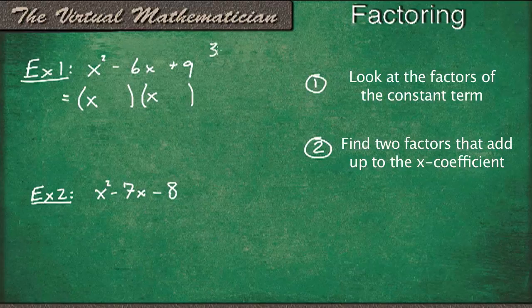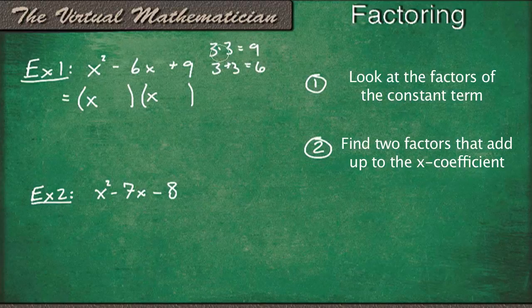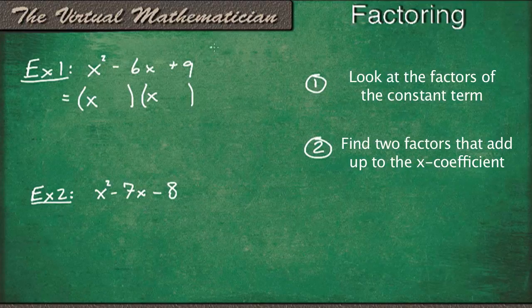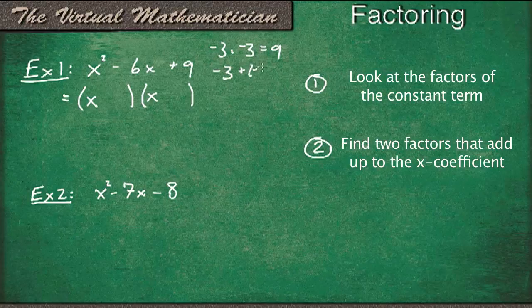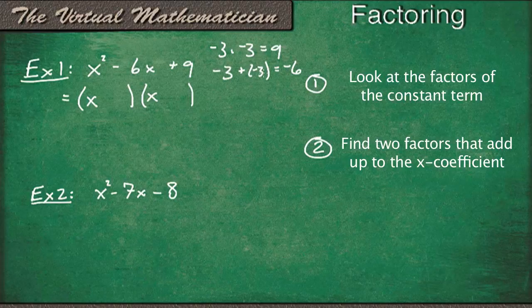So we know 3 times 3 equals 9, but 3 plus 3 equals positive 6, not negative 6. So that won't work. But we also know that negative 3 times negative 3 equals 9. And negative 3 plus negative 3 equals negative 6. So that means minus 3 and minus 3 work.